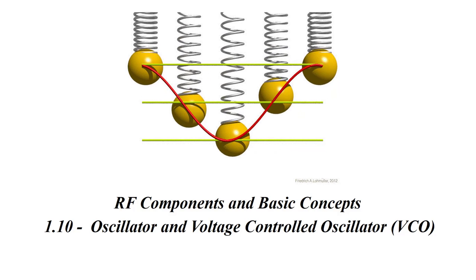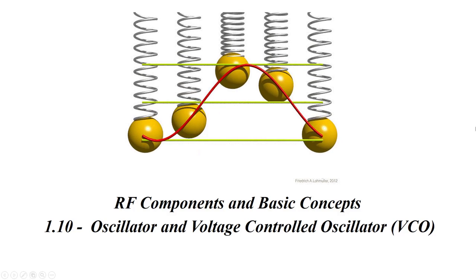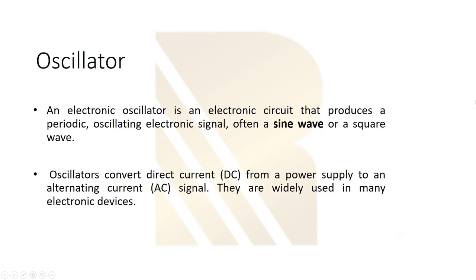In this section we are going to talk about oscillators and voltage controlled oscillators. What is an oscillator? It's an electronic circuit that produces a periodic oscillating electronic signal, often a sine wave or a square wave. So it's a device that produces sine waves.